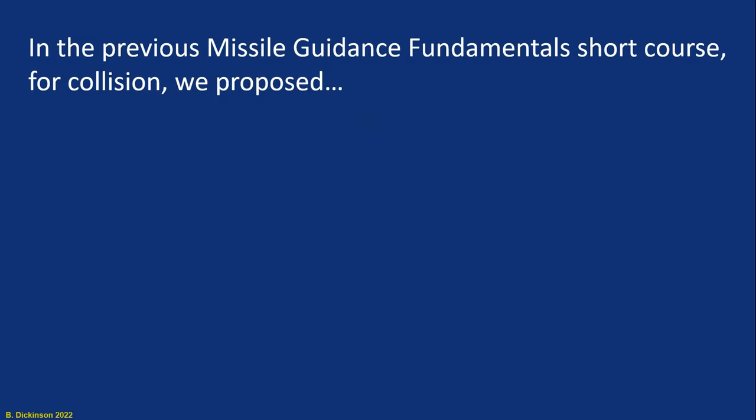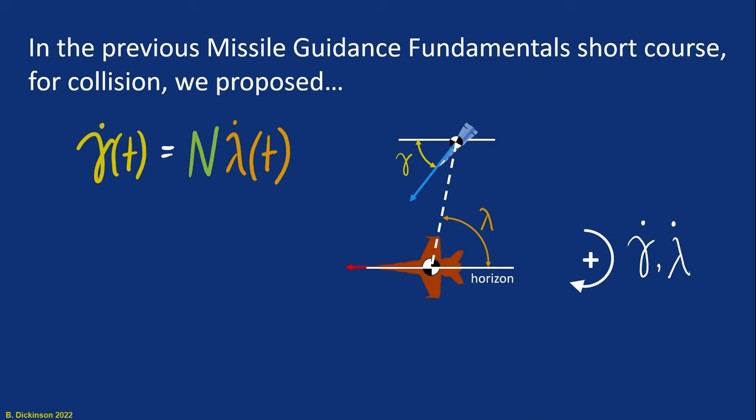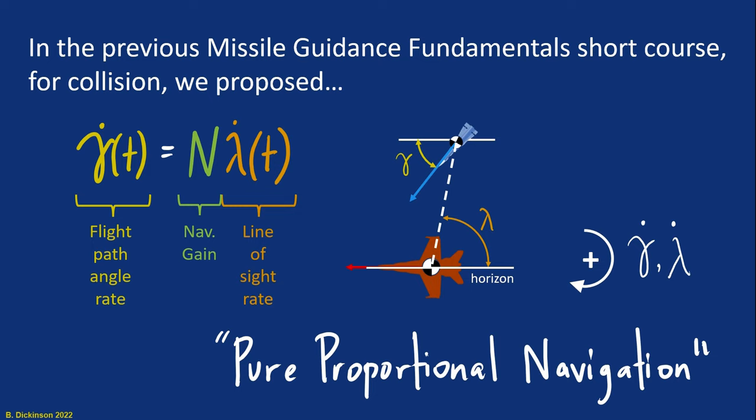In the previous missile guidance short course, we proposed a feedback law that related the flight path angle rate of the pursuer to a navigation gain multiplied by a line of sight rate to obtain a collision course. This was pure proportional navigation, we covered this in some depth, but it was just proposed based off of observation and intuition.